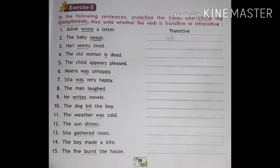Number ten: the dog bit the boy. Underline 'bit' and the object is 'the boy' — circle it. Number eleven: the weather was cold. Underline 'was' and 'cold' is the complement — circle 'cold'. Number twelve: the sun shines. Underline 'shines' — it is a verb and there is no object or complement here. It is an intransitive verb.